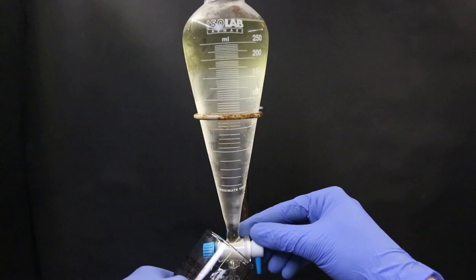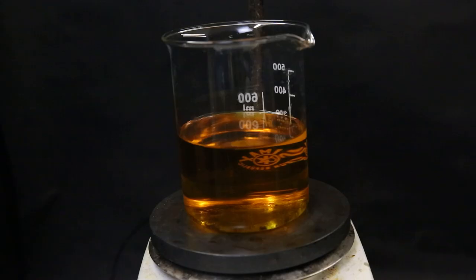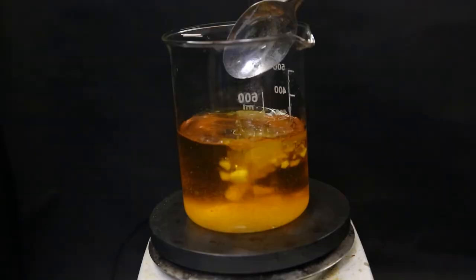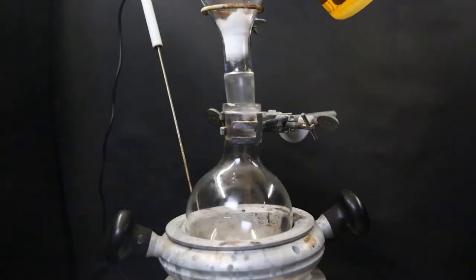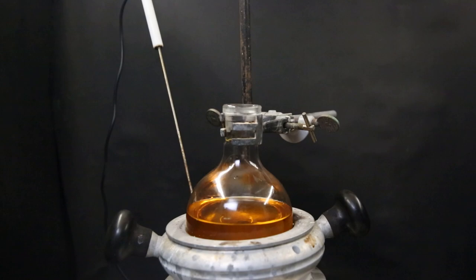I then combined the ether extracts with the pseudo-ionone layer and added in some sodium sulfate to dry it. After that, I filtered it all through some cotton directly into a flask. When that is done, I set it up for a distillation to boil off all of the ether.